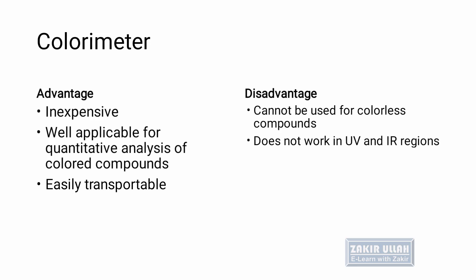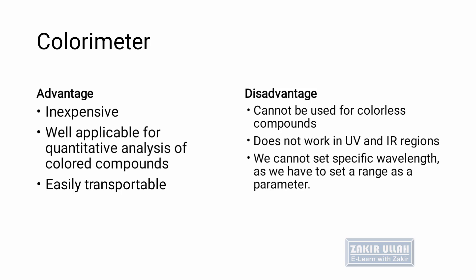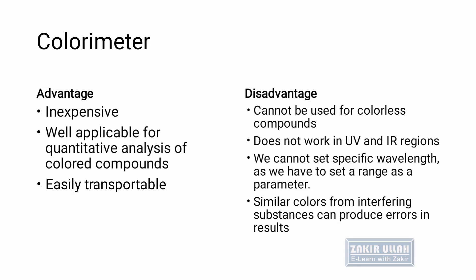The disadvantages are that colorimeters cannot be used for solutions which do not have color. Colorimeters do not work in the ultraviolet region — the electromagnetic spectrum range below 400 nanometers — or in the infrared region with a wavelength above 700 nanometers. Colorimeters cannot set a specific wavelength because we must set a range of wavelengths. Also, solutions with similar colors can interfere with results and produce errors.